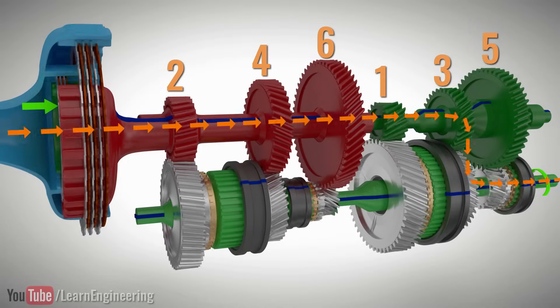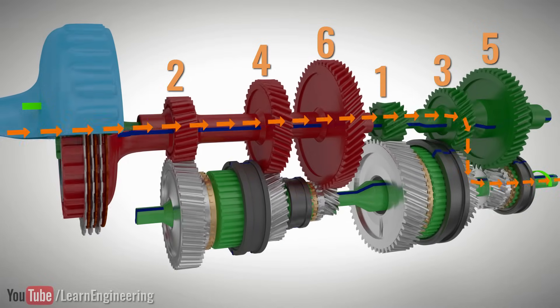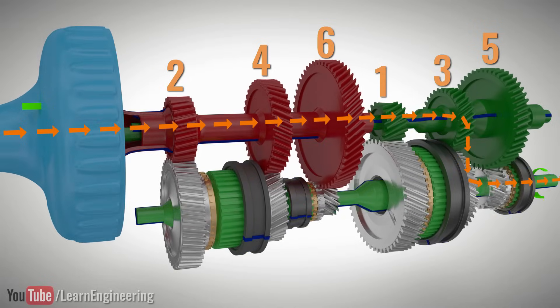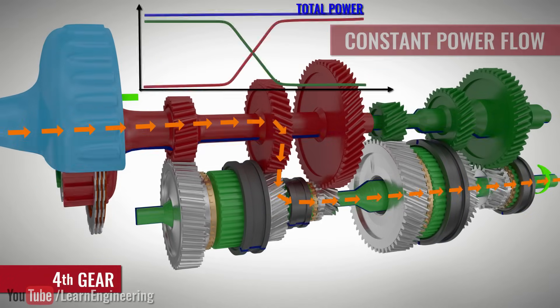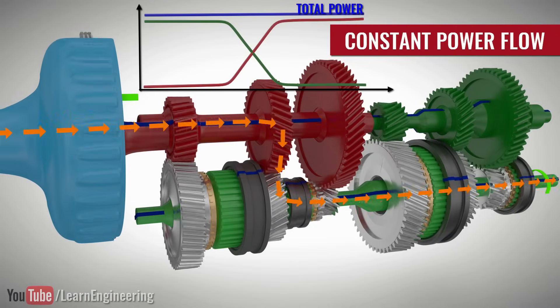This means that to move to the fourth gear, what you have to do is simply release the green clutch set and engage the red clutch set. This pre-selection of gears guarantees a constant power flow even during the transition phase.